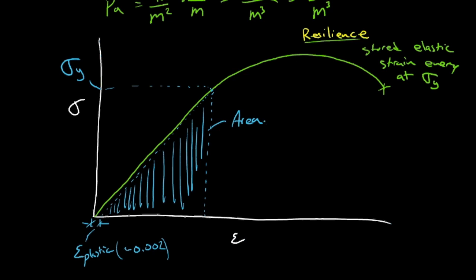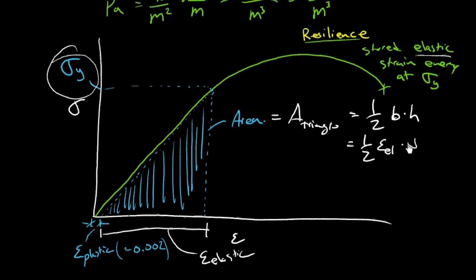And so that area there is the resilience. And that area, actually, is just the area of a triangle. It's the area of a triangle. And we know that the area of a triangle is 1 half base times height, which in our case is 1 half of what's the base? The base is the elastic strain, isn't it? And that's good, because we're after the stored elastic strain energy. So we've got strain elastic. And what's the height? Well, the height is the yield strength.